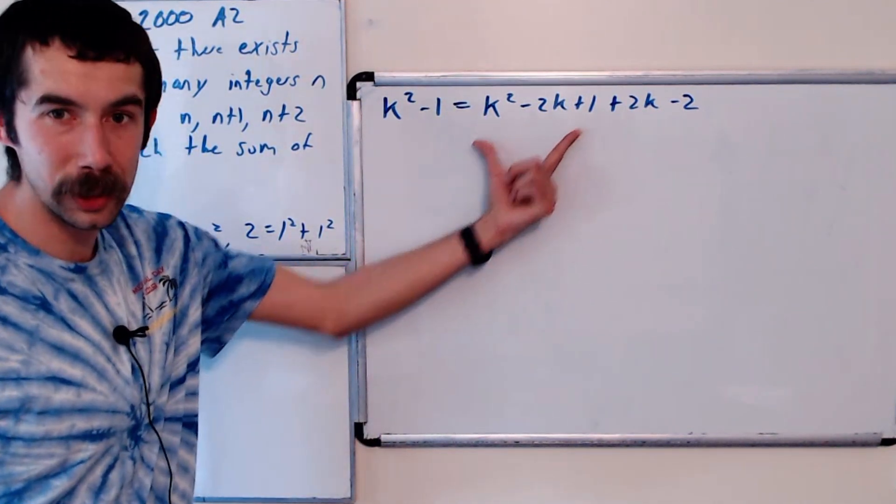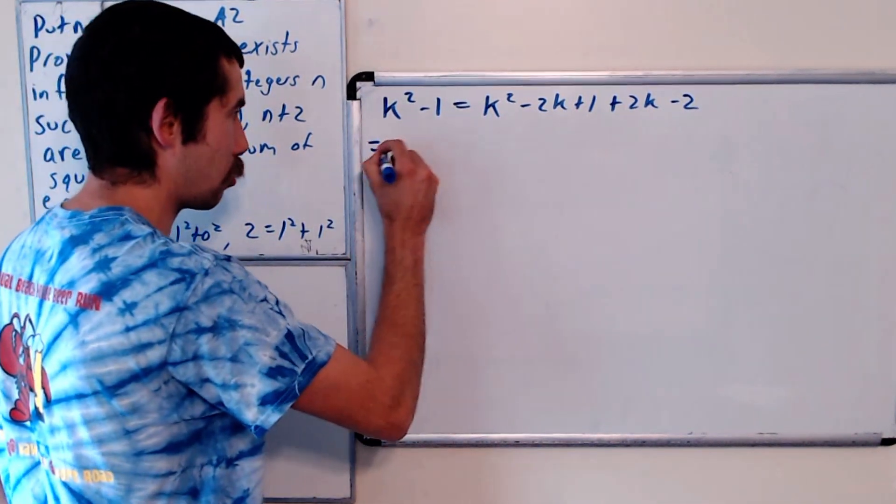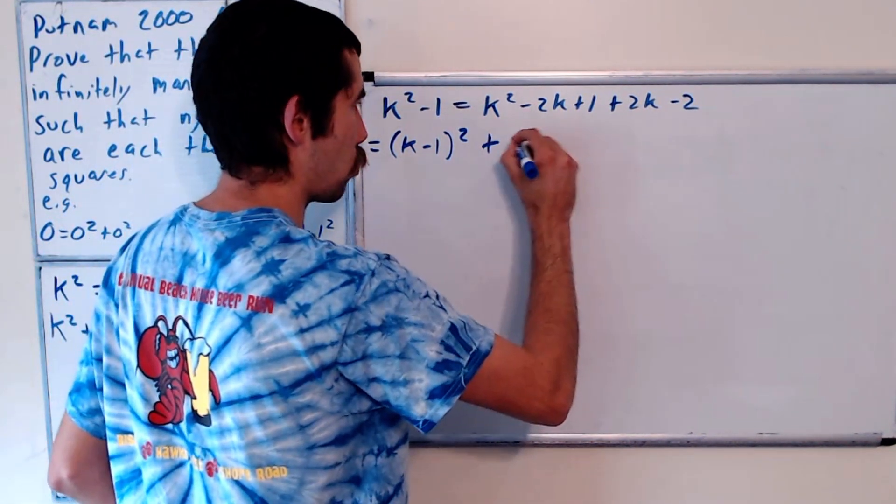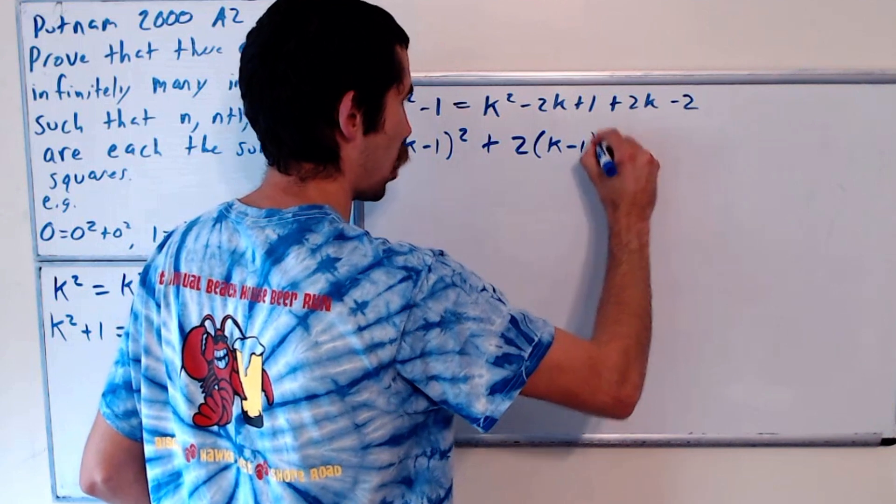Well, this is a perfect square. This is equal to k minus 1 squared plus 2 times k minus 1.